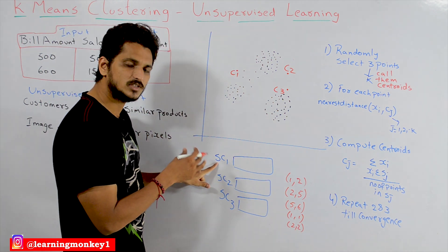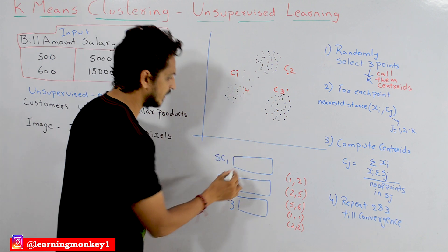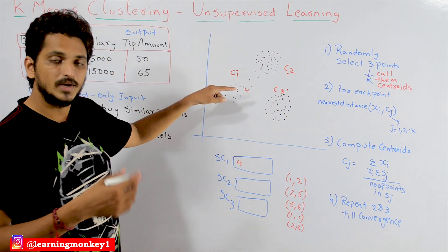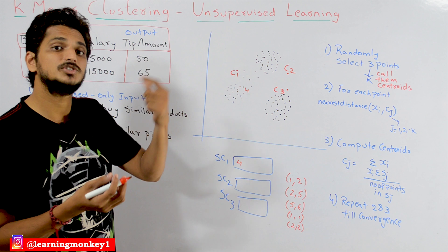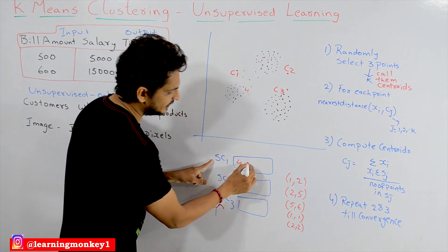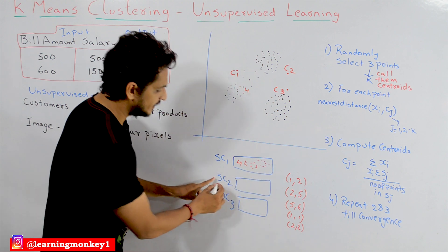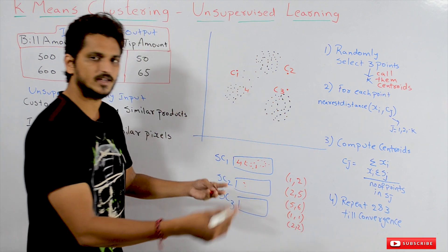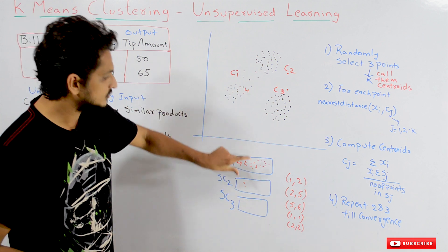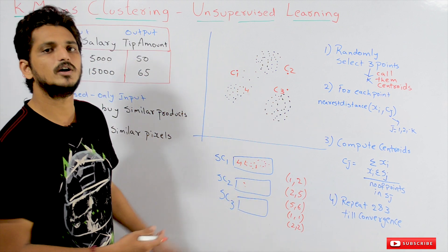We repeat this process for all data points. SC1 consists of a set of points like L1, L2, L8, L9, and so on. SC2 consists of another set of points like L15, and so on. This way, we divide all points into 3 groups: some belong to SC1, some to SC2, and some to the third set.